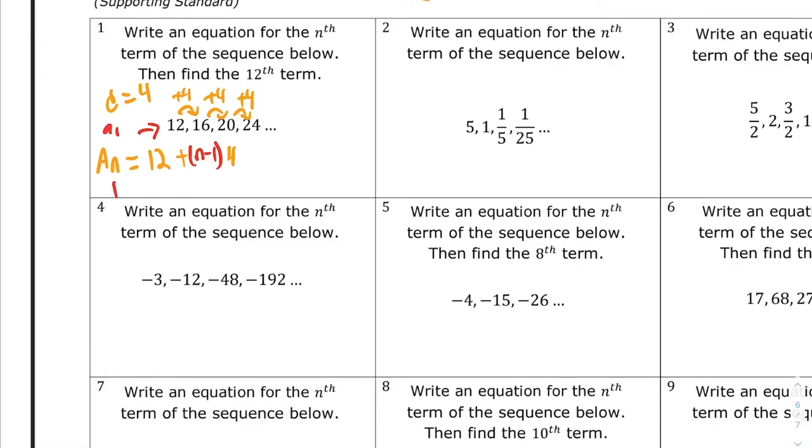Now we're going to use this to find a_12. a_12 is 12 plus 12 minus 1 times 4. That's 12 plus 11 times 4, which is 12 plus 44. And that would be equal to 56. a_12 is 56.